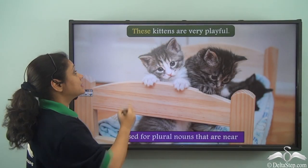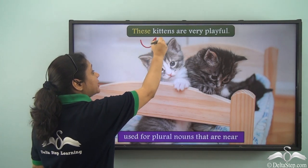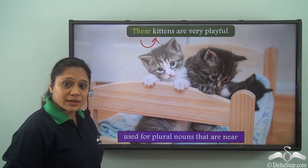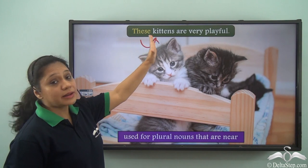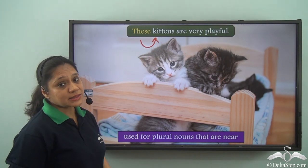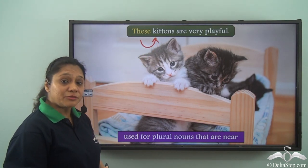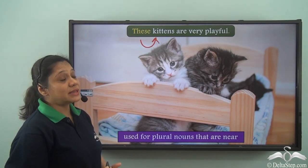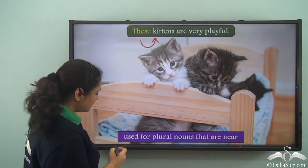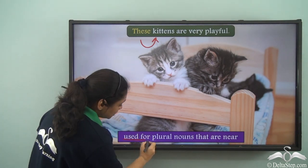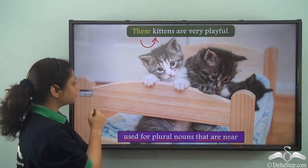'These kittens are very playful.' In this sentence, 'these' is referring to some particular kittens, so it is modifying the noun 'kittens.' Hence 'these' is a demonstrative adjective, and we see that 'these' is used for plural nouns that are near.